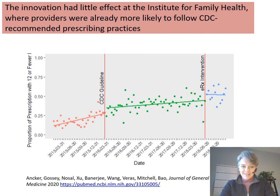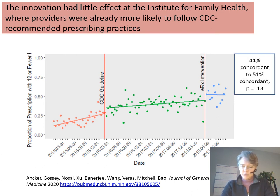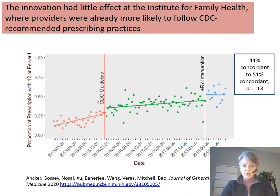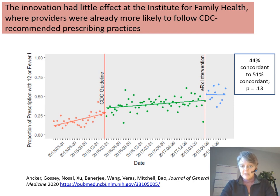By contrast, interestingly, when we did this at Institute for Family Health, the e-prescribing intervention did not produce much of a change — about a six to seven percentage point increase, which was not statistically significant. We think this is a ceiling effect. The community health center was already much more conservative in their prescribing: almost 50 percent of their prescriptions were already at 12 or fewer pills. At Weill Cornell we were only at about 12 percent congruence at the same time that Institute for Family Health was at 44 percent congruence. So there was very little impact on prescribing choices at Institute for Family Health, largely because they were already doing better than we were.